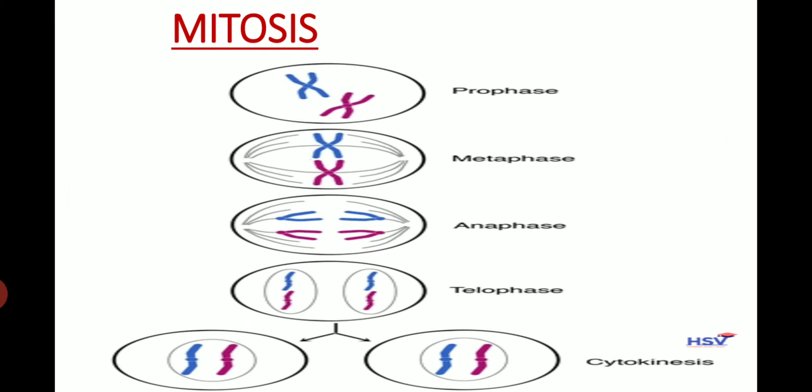Next, mitosis. This occurs in four stages, namely prophase, metaphase, anaphase, and telophase. So these four stages are: prophase, metaphase, anaphase, and telophase.